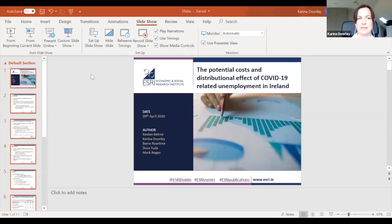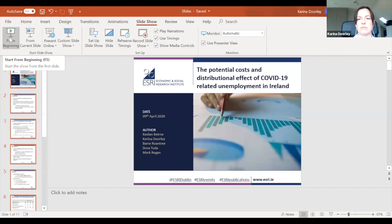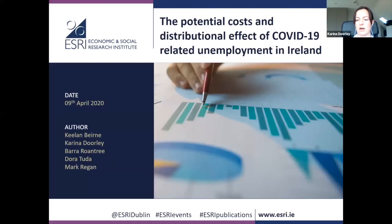Thanks very much, Alan. Today I am going to present to you the first in a series of budget perspectives papers this year, which is called 'The Potential Costs and Distributional Effect of COVID-19 Related Unemployment in Ireland.' Hopefully you should all be able to see that on your screens now instead of my face.